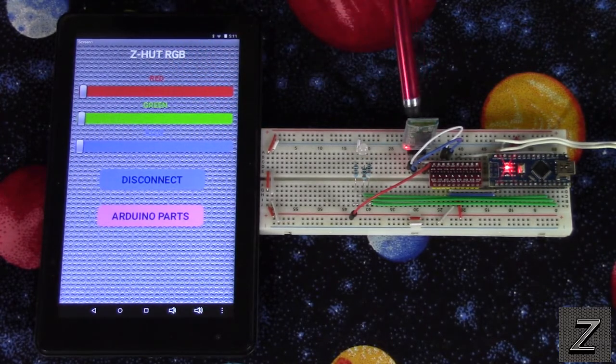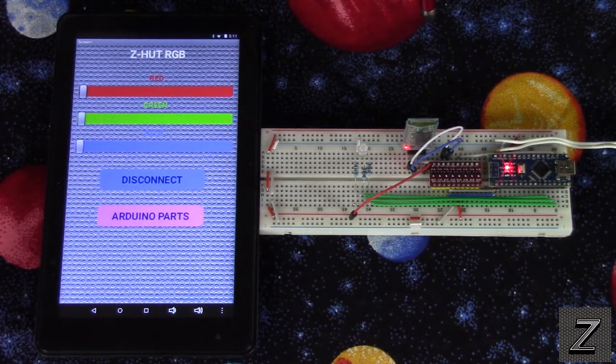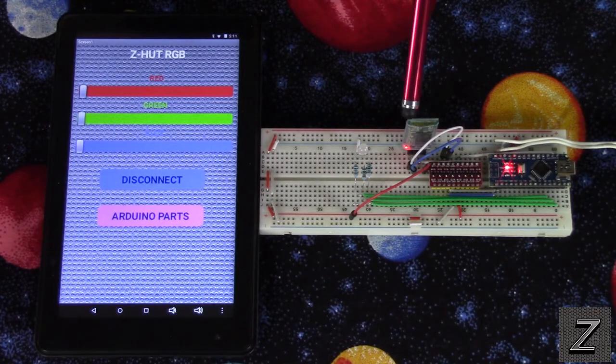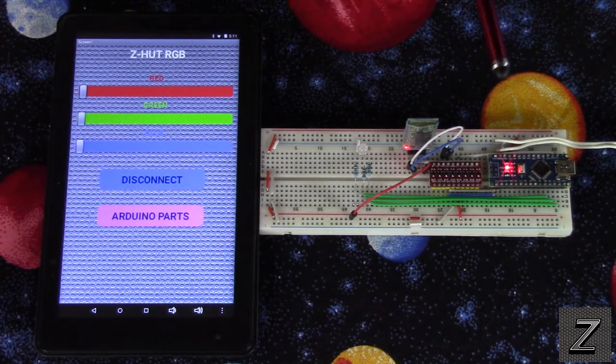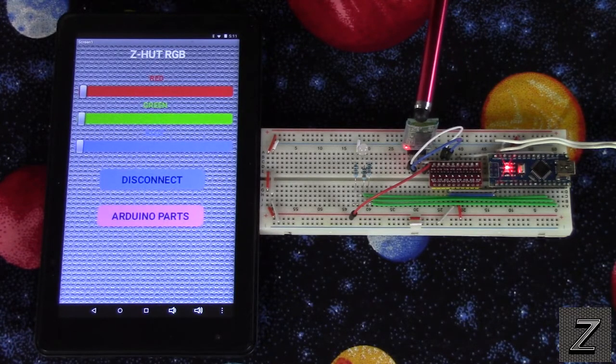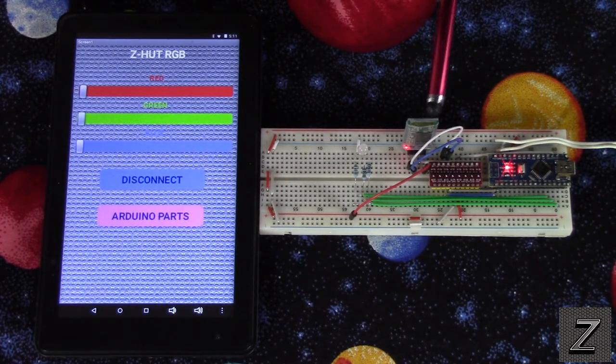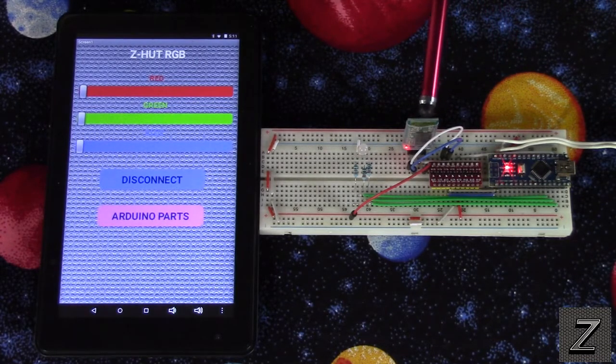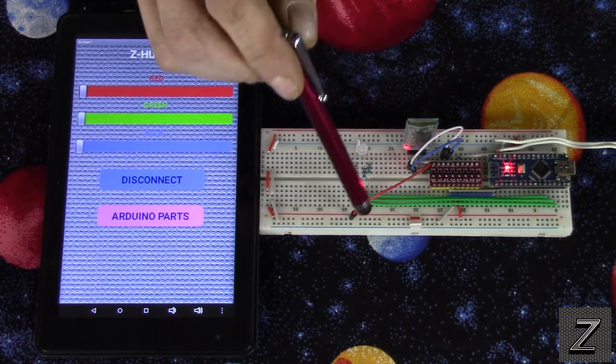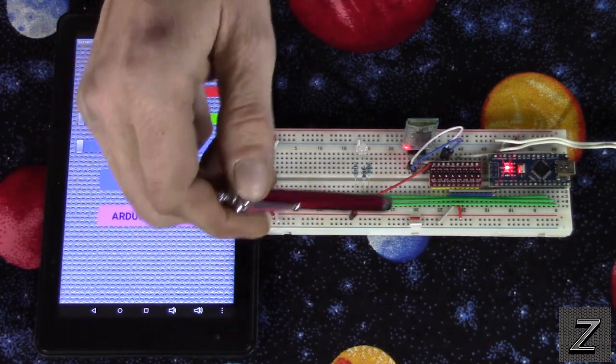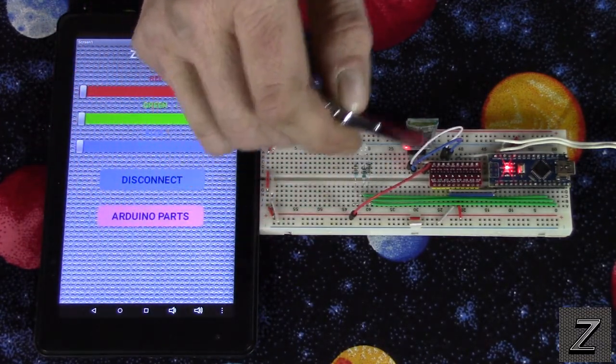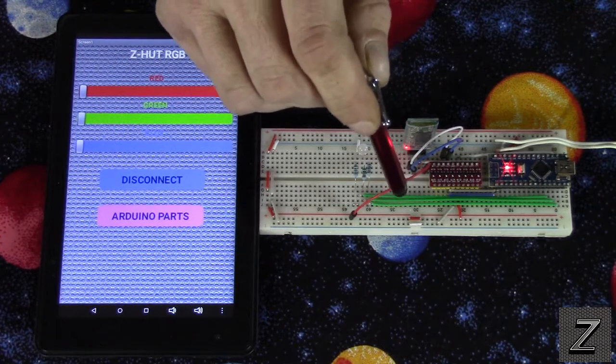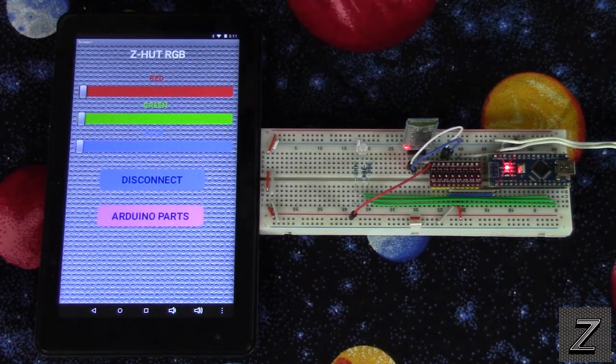And one little thing on most 3.3 volt items, they run on 3.3 volts. But the HC-06 needs to be powered by 5 volts, although its logic only uses 3.3. So you have to run, and that's what this is here. The voltage for the board itself has to be the 5 volts off the Arduino board.